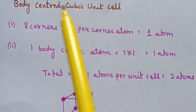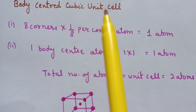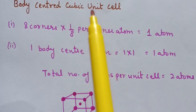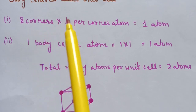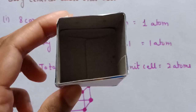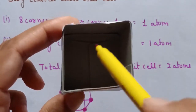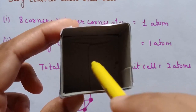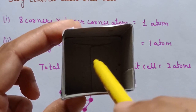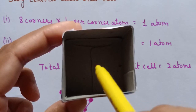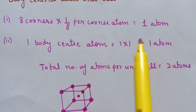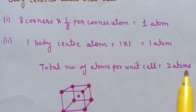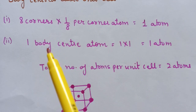Next is the body centered unit cell. Constituent particles are present at all corners and at the center of the body. Contribution from corners: 8 × (1/8) = 1 atom. The particle at the body center is entirely within one unit cell, so its contribution is 1. Therefore, total number of atoms in a body centered cubic unit cell is 2 atoms.